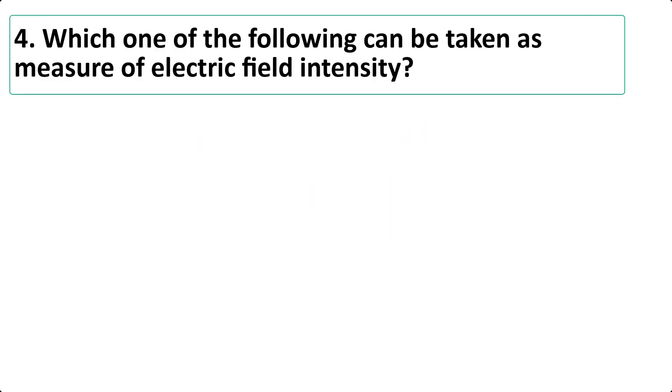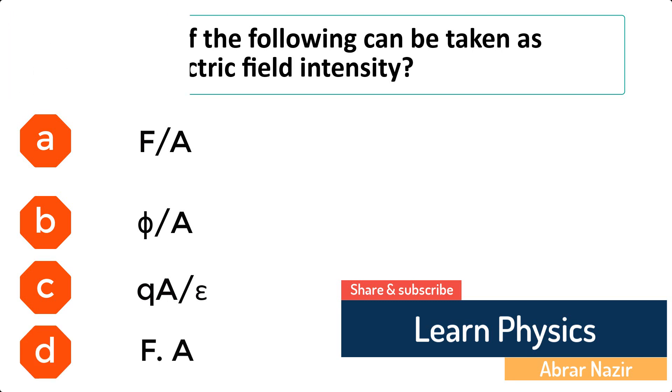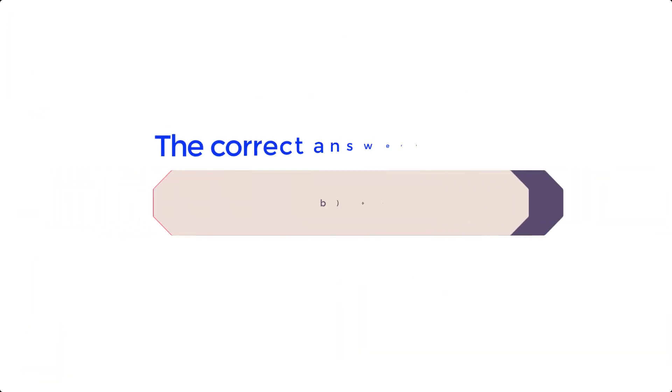Multiple choice question number 4. Which one of the following can be taken as measure of electric field intensity? A. F over A. B. Phi over A. C. QA over Epsilon. D. F.A. The correct answer is